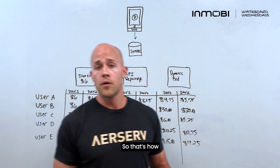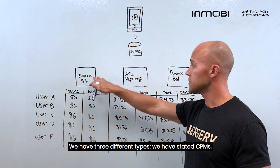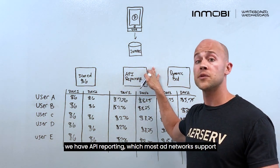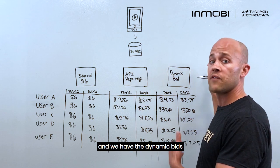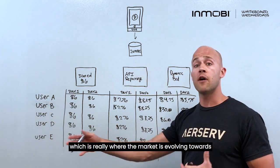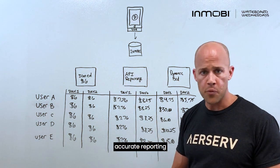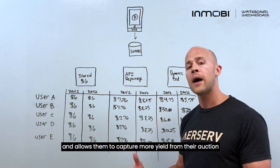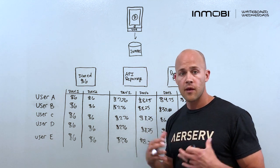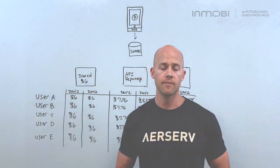So that's how CPMs get influenced into the auction. We have three different types: stated CPMs, API reporting which most ad networks support, and dynamic bids — which is really where the market is evolving towards, and which gives publishers more accurate data, accurate reporting, and allows them to capture more yield from their auction. Thank you for your time. This has been another Whiteboard Wednesday. We look forward to seeing you again.